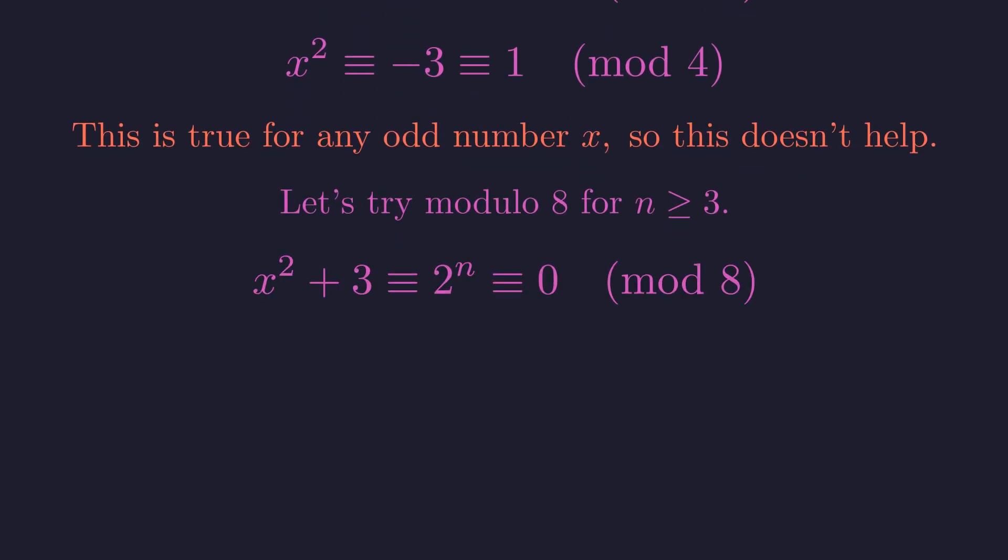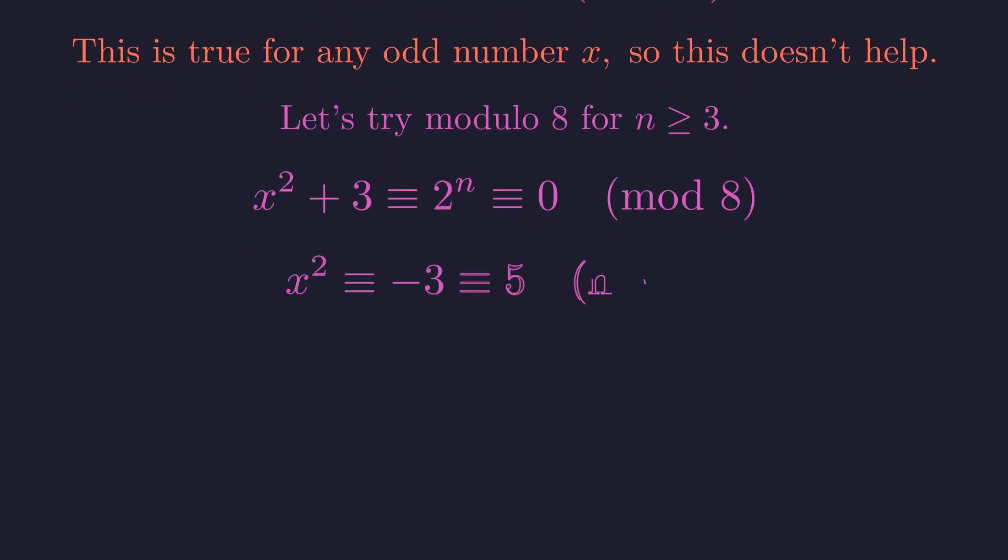Modulo 8, the right side is 0 for any n greater than or equal to 3. This implies x squared must be congruent to 5 modulo 8.